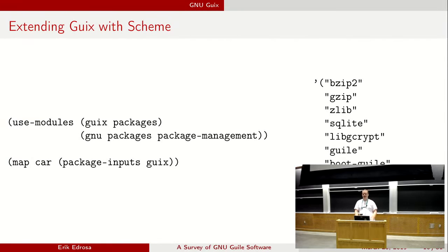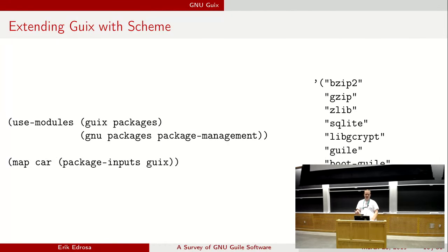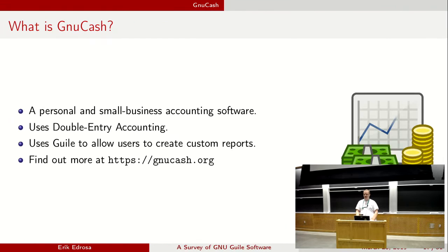What about also extending Guix? You can extend it with Scheme. Since Guix is written in Scheme, a lot of the functionality is available through the API. In this example, we import the Guix packages module to get the 'package-inputs' procedure, as well as get all the packages from the package management module. Here we just get the Guix package and use 'map car' to get the names of all the packages used to build Guix.